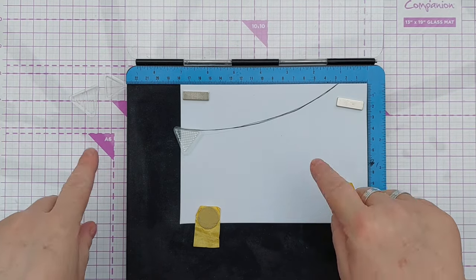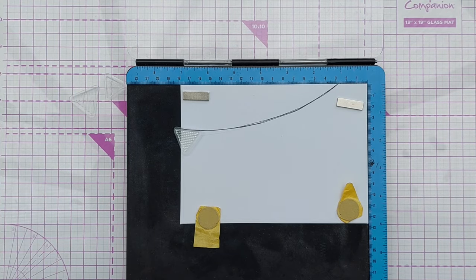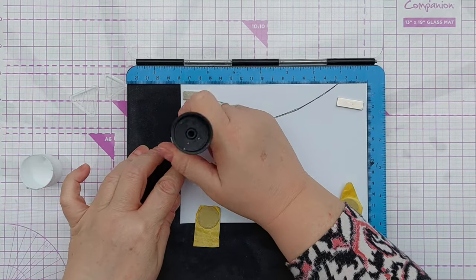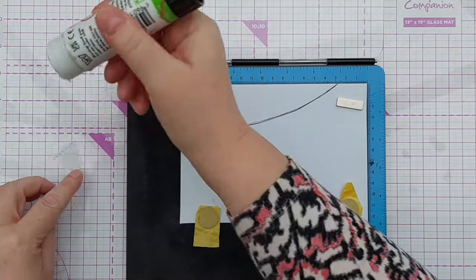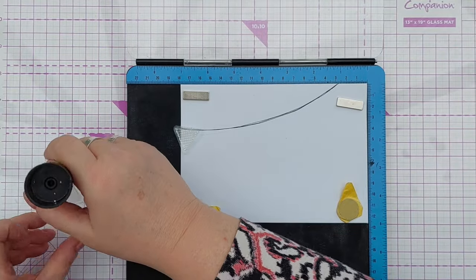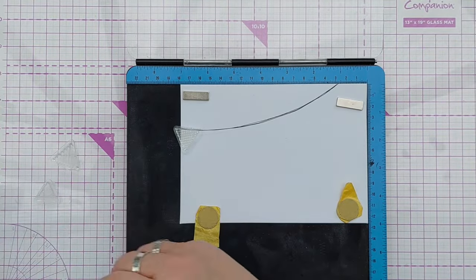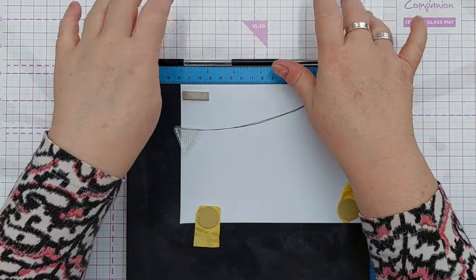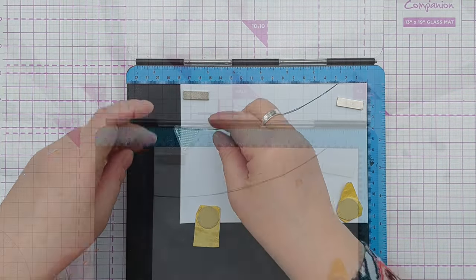One thing I do want to do before I finalize my position is add some glue to the back of each of these stamps. They're silicone stamps, which means they're not as sticky as photopolymer stamps, so a little bit of stick glue just helps them stick to the positioner door or an acrylic block.